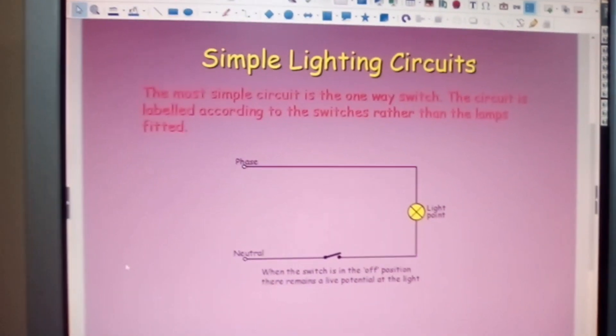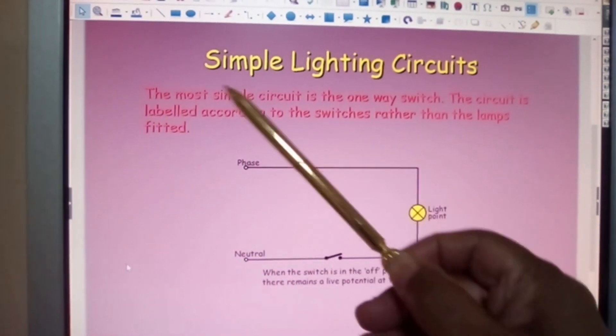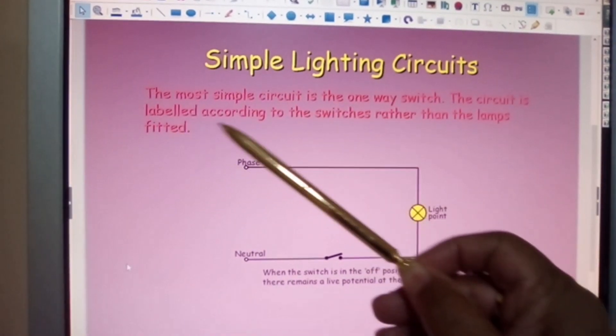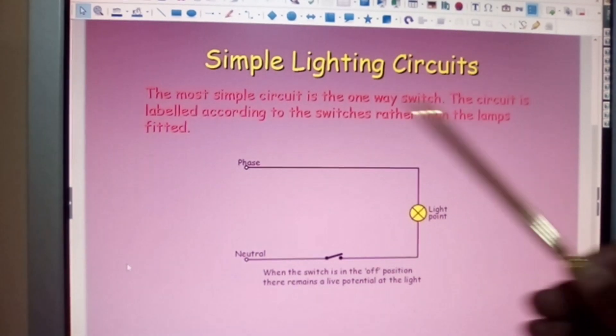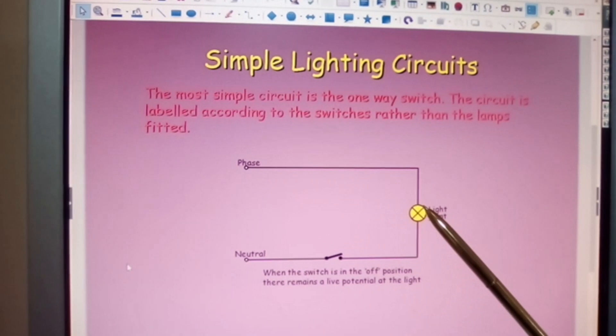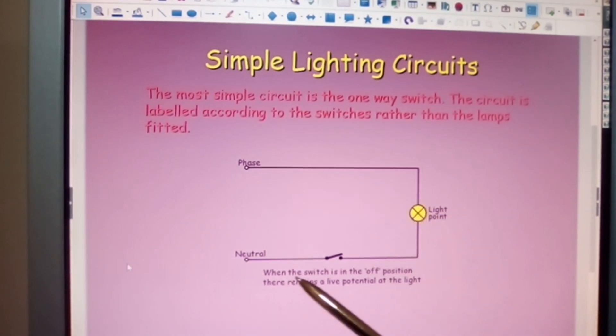Simple lighting circuit. The most simple circuit is the one-way switch. The circuit is labeled according to the switches rather than the lamps fitted. So phase, live conductor, neutral.